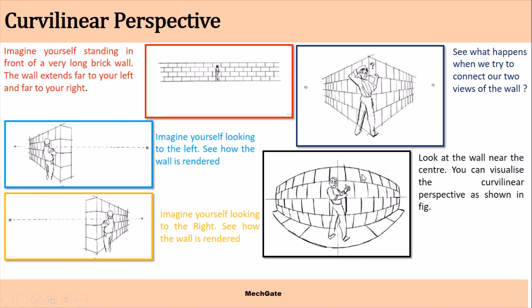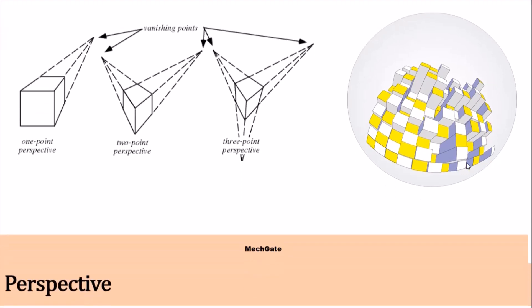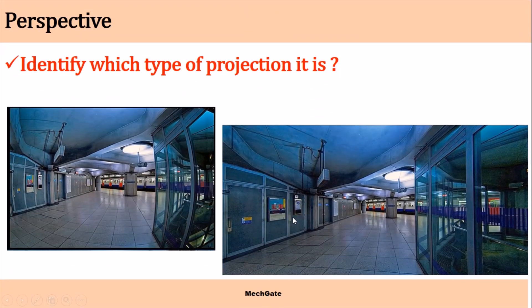Curvilinear perspective is more realistic compared to the other three types. To recap, we discussed one-point, two-point, three-point, and curvilinear perspective projections. Here is a quick task: identify which type of perspective projection is used in figure number 1 and figure number 2.